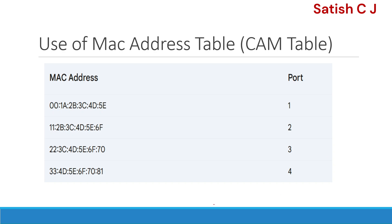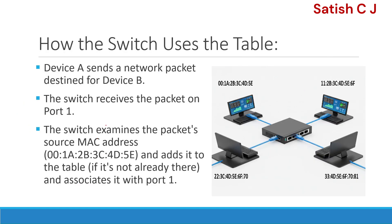The network switch maintains the CAM table, which contains the MAC address of each system and its corresponding port number. If system A wants to send a packet to system B, the switch looks up the port number for system B's MAC address and forwards the packet directly to that port. Let's take a scenario to understand this.